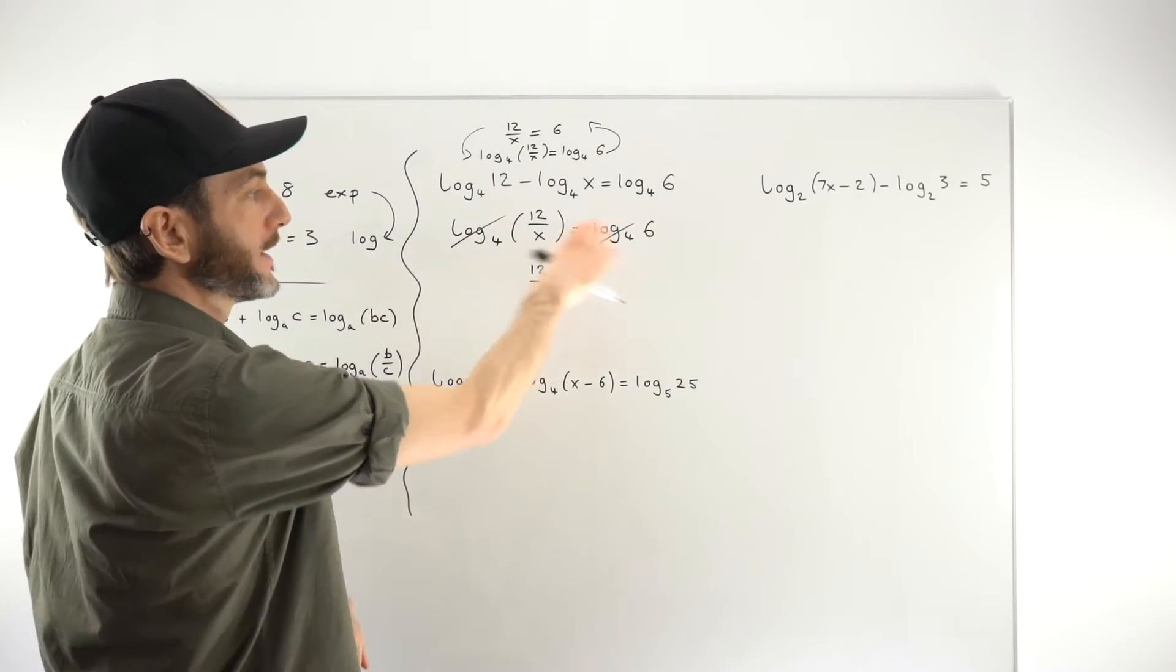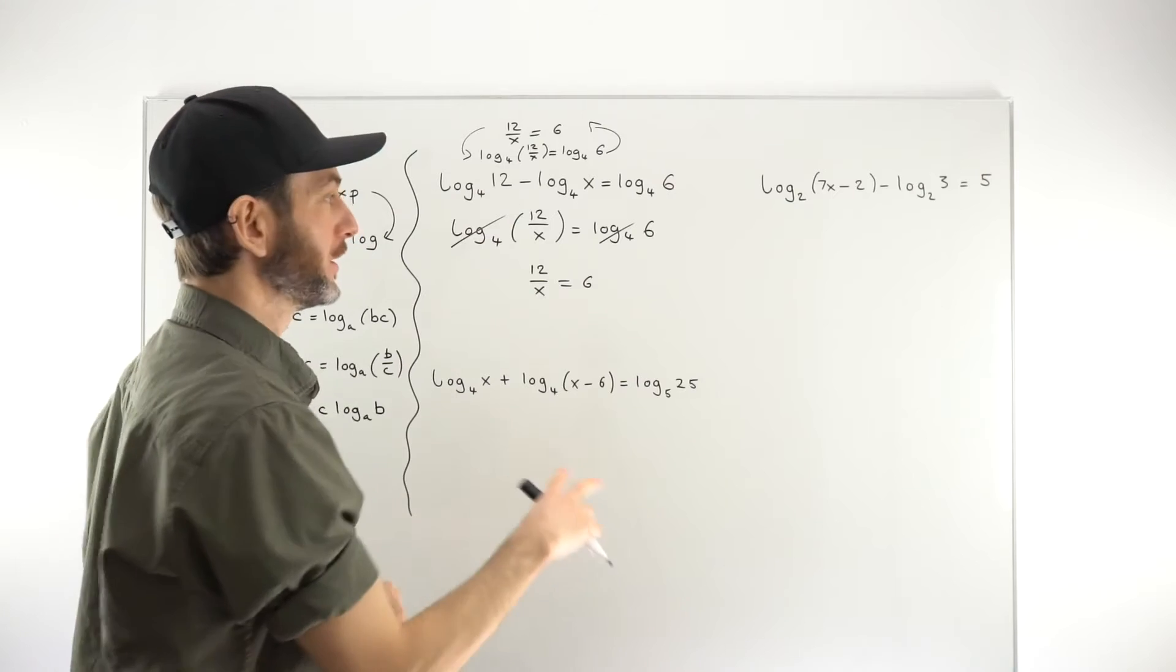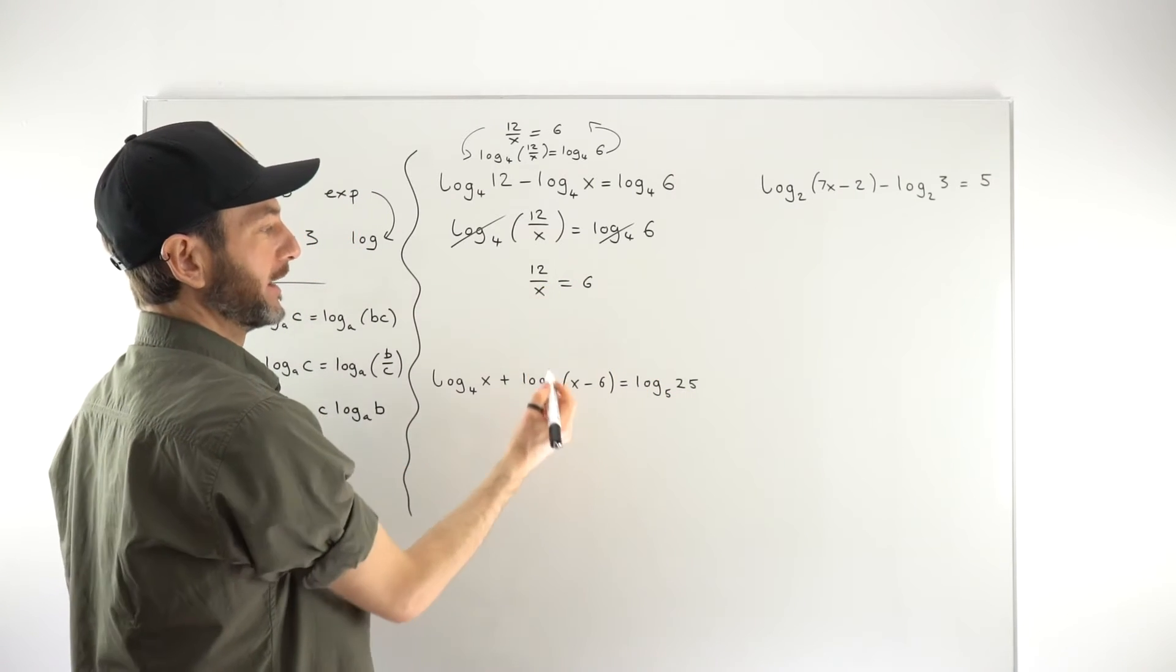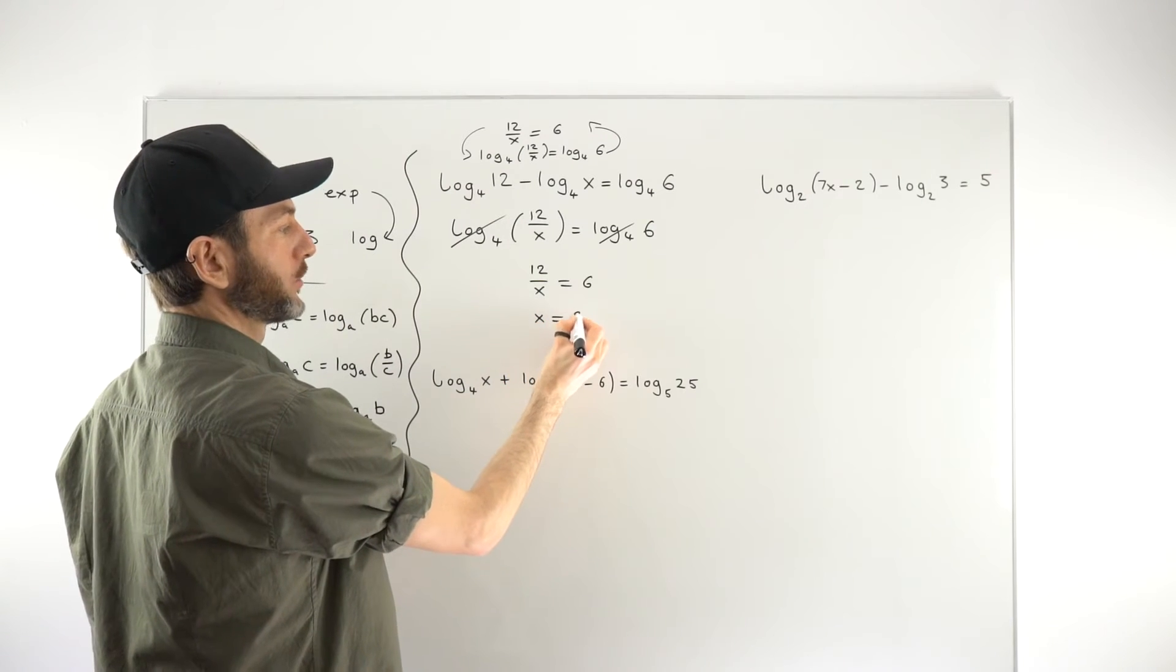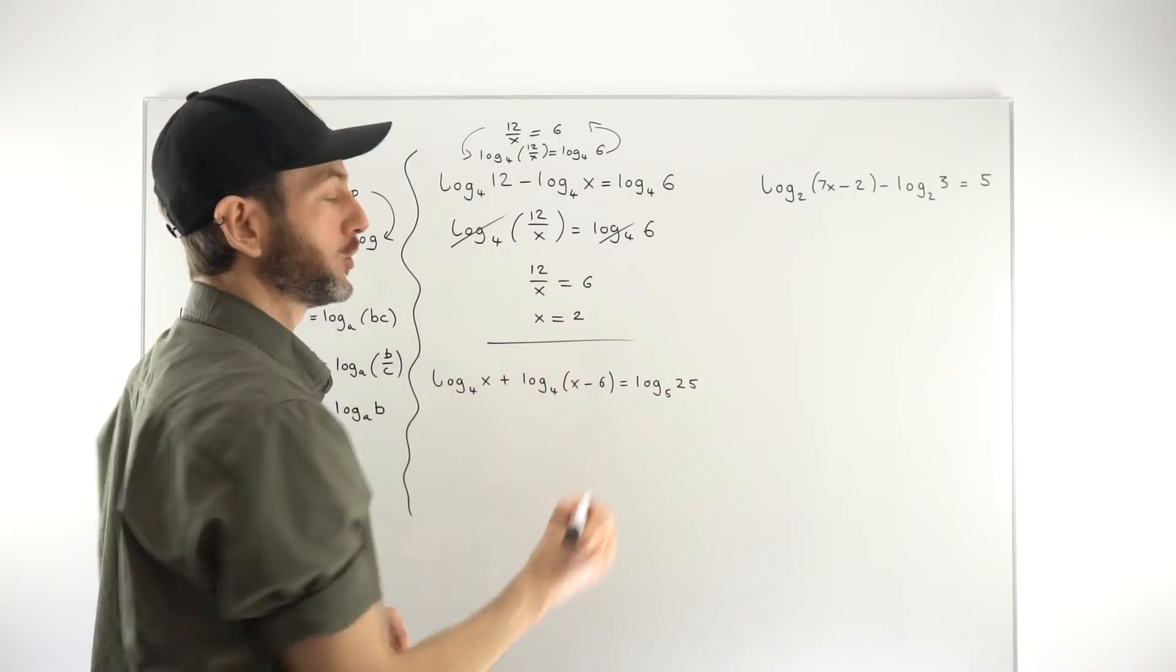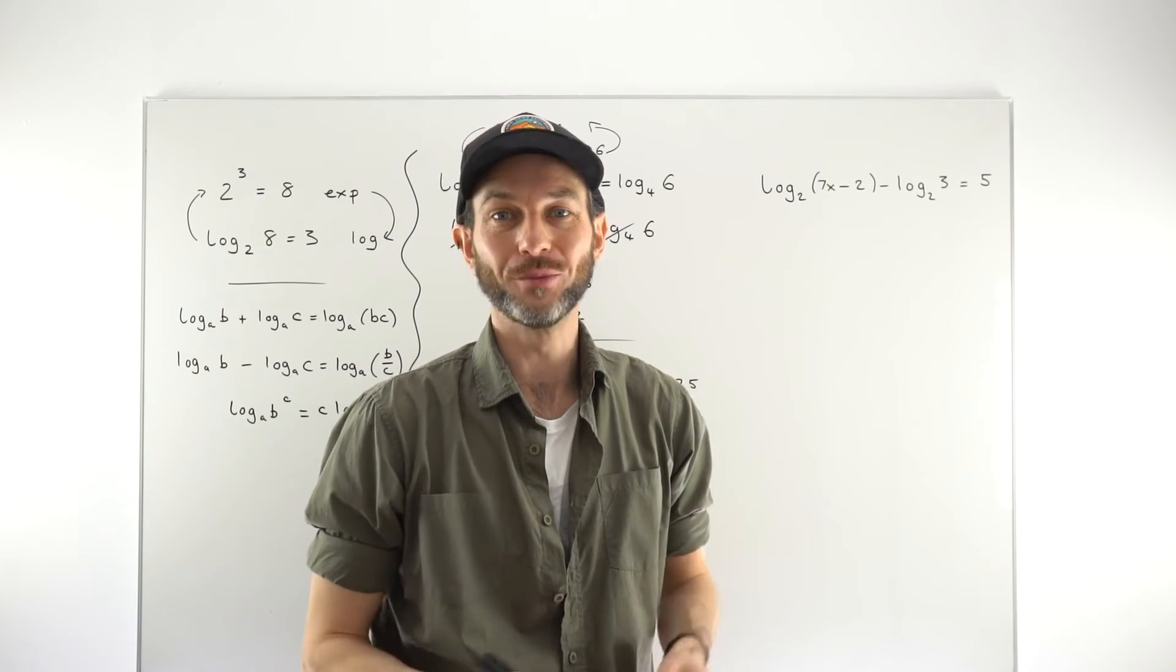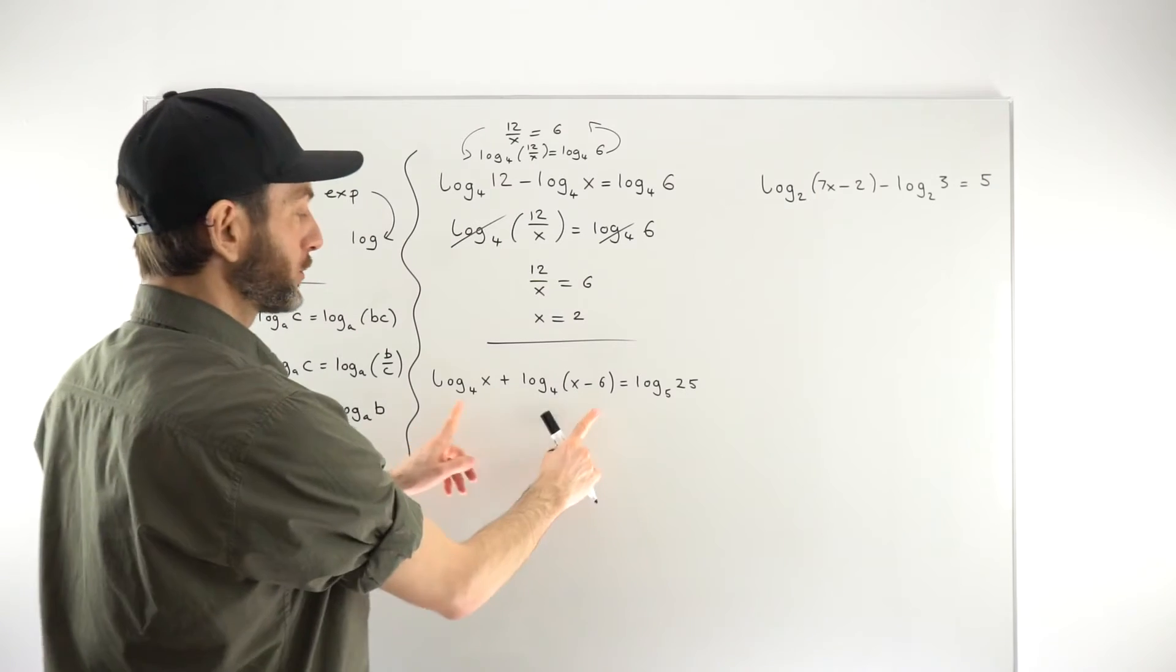So that is the technique we've used to get rid of the logarithm this time, just dropping them, cancelling them, leaving us a little equation to solve to get the x value. So just quickly solving that, you can do it just by inspection. So x must equal 2, because 12 divided by 2 equals 6. Generally, in these questions, once you've gotten rid of the logarithm, the actual solving of the equation part is quite trivial. Usually, sometimes, not always. This one will be a little bit tougher.